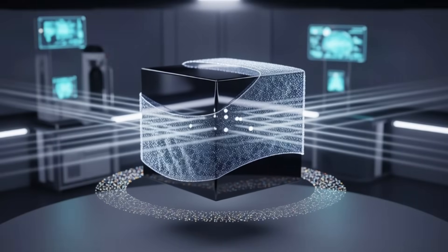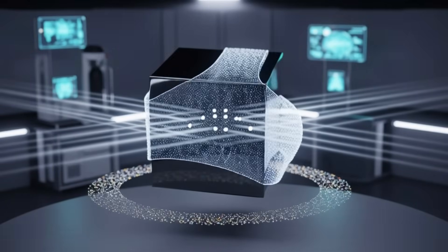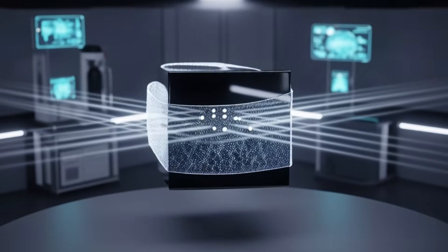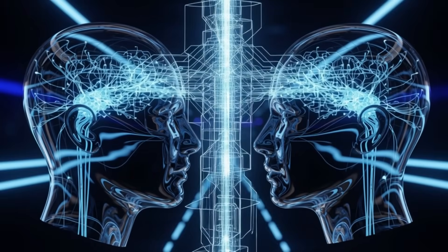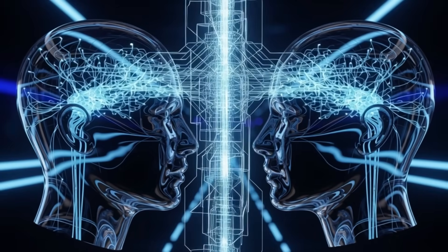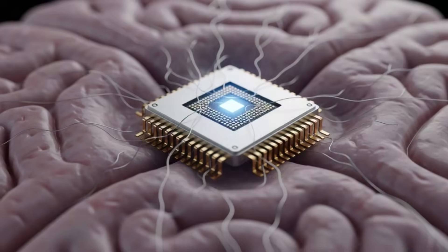Number 7: Cloaking technology. Invisibility cloaks are real. Metamaterials can bend light around objects, making them vanish from view. So far, they're small scale, but scientists are perfecting fabrics that hide anything from drones to people.